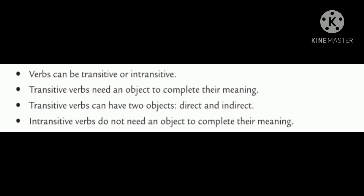Points to remember: verbs can be transitive or intransitive. Transitive verbs need an object to complete their meaning. Transitive verbs can have two objects: direct and indirect. Intransitive verbs do not need an object to complete their meaning.